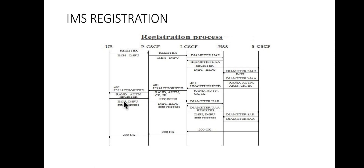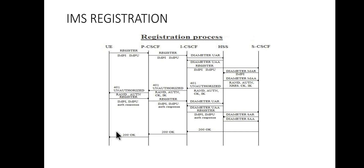The REGISTER message reaches the S-CSCF again. The S-CSCF compares the RES sent by the UE with the expected response it previously saved. If they match, the S-CSCF sends a SAR — Server Assignment Request — to the HSS. The HSS responds with SAA — Server Assignment Answer — which includes the list of application servers and their capabilities for third-party registration. After that, the S-CSCF sends a 200 OK message to the UE, and the registration is completed.